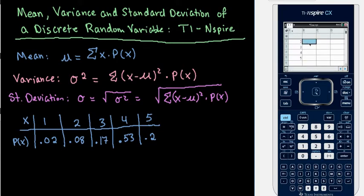Then I would do the same thing with the next row for my probability of X. I'm just going to call it PRB for probability. You can call it whatever you want to. Then I'm just going to arrow down and I'm going to put in all of my individual probabilities: 0.02, 0.08, 0.17, 0.53, and 0.2.